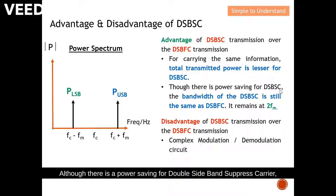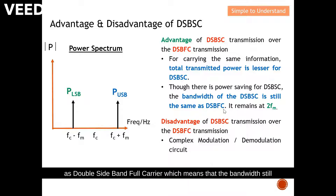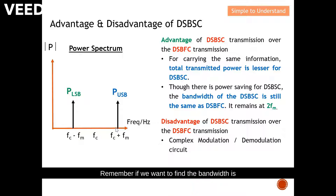Although there is a power saving for DSB-SC, the bandwidth of DSB-SC is still the same as DSB-FC, which means the bandwidth remains at two times the frequency of the modulating signal. Remember, bandwidth is always the highest frequency component minus the lowest frequency component.